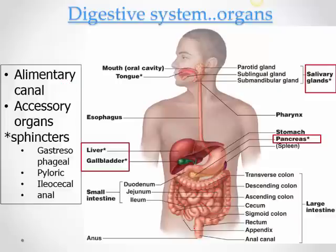Associated with this alimentary canal are accessory organs which connect to it by means of ducts. These accessory organs are mainly glands, and the liver is also a glandular structure. They pour their secretions into the alimentary tract, developing alongside it.